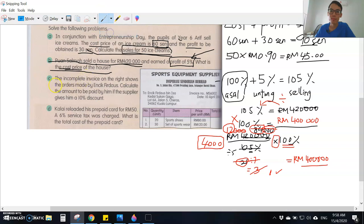Question C: The incomplete invoice on the right shows the order made by Encik Firdaus. Calculate the amount to be paid if the supplier gives him a 10 percent discount. You have to calculate the invoice first. Quantity 20 per unit RM80, so total is 20 times RM80. The sports shoes total is RM1,600. The second one: 30 units times RM120. You get RM3,600.